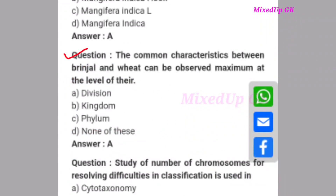Next question: The common characteristics between brinjal and wheat can be observed maximum at the level of which category? Options include division, kingdom, phylum, or none of these. The correct answer is option A: division. Common characteristics are observed at the division level.